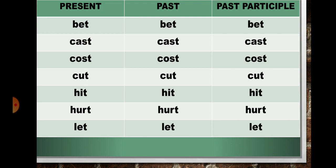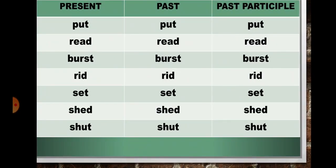In present if it is 'hit', so in past also it will be 'hit', and in past participle form also it will be 'hit'. In present if it is 'hurt', so in past also it will be 'hurt', and in past participle form also it will be 'hurt'. In present if it is 'let', so in past also it will be 'let', and in past participle form also it will be 'let'.